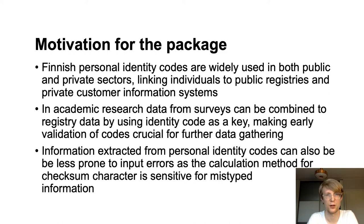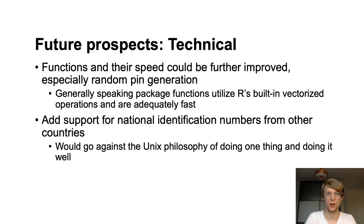Information extracted from personal data can furthermore be less prone to input errors, as the calculation method for checksum characters is sensitive to mistyped information. The future prospects of this package are twofold. The first is technical: the package functions could always be a bit more speedy, especially the random personal identification number generator. Also, the package could easily support more national identification numbers, for example from other Nordic countries. Then again, generally speaking, the package functions are quite speedy as they are, as they utilize R's built-in vectorized operations. And adding support for more countries would go against the Unix philosophy of doing one thing and doing it well.